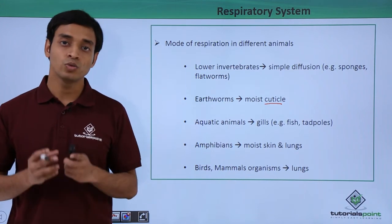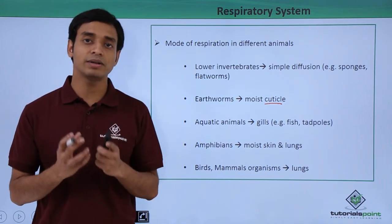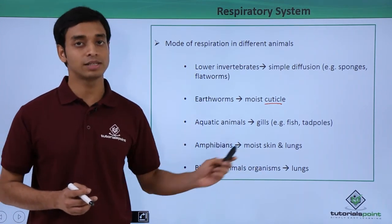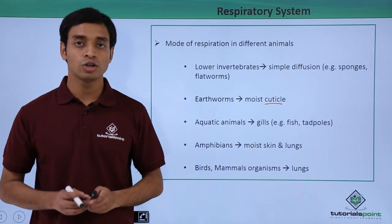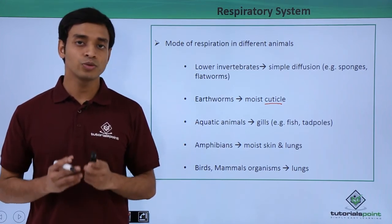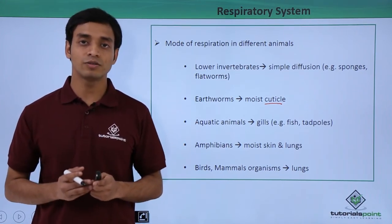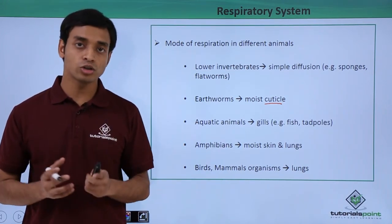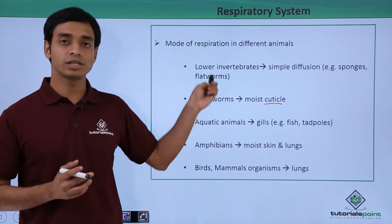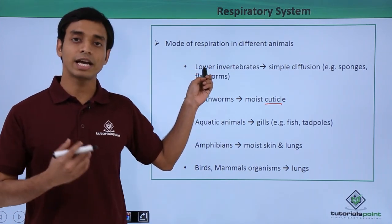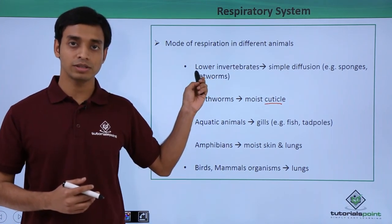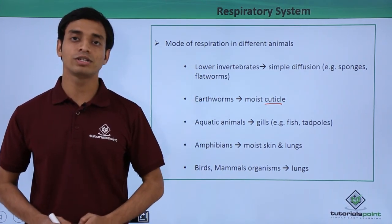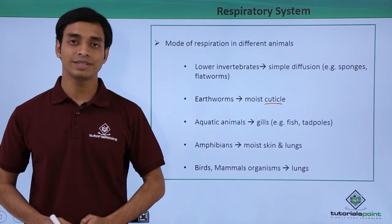Similarly, in the case of birds and mammals, these organisms have a well-developed respiratory system, and the main important organ for these organisms is the lungs. In this video we have introduced the respiratory system and discussed some of the respiratory mechanisms in different types of animals. I hope you have liked and understood this video. Thank you.